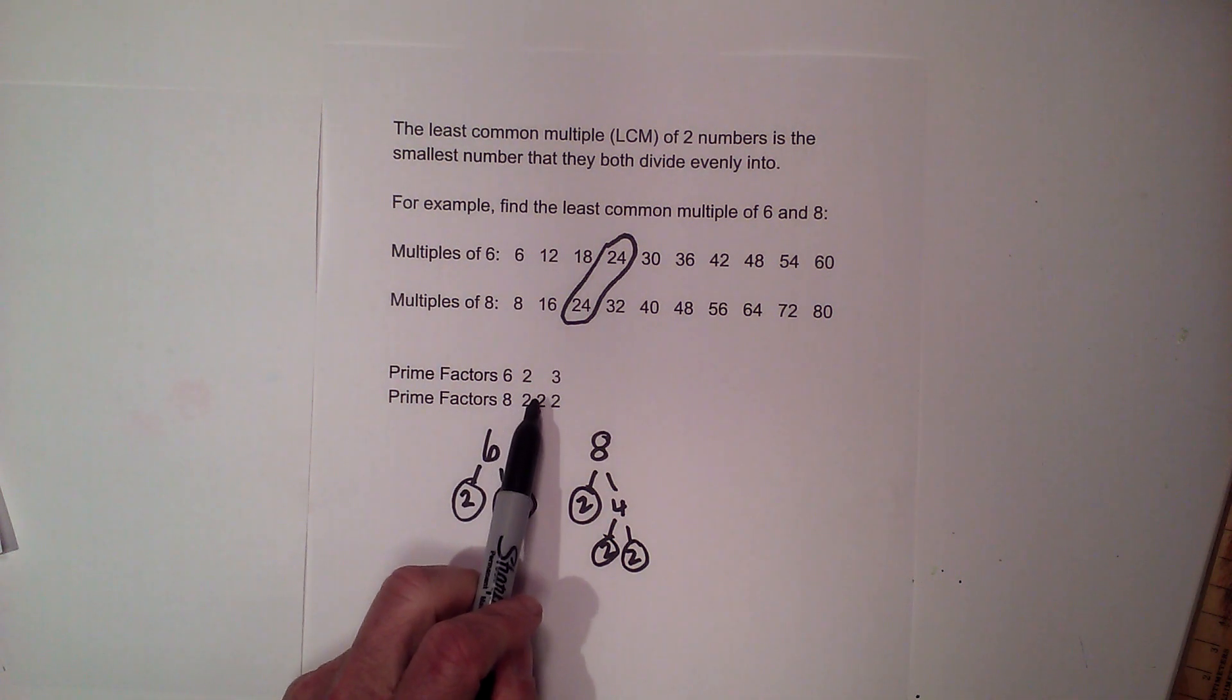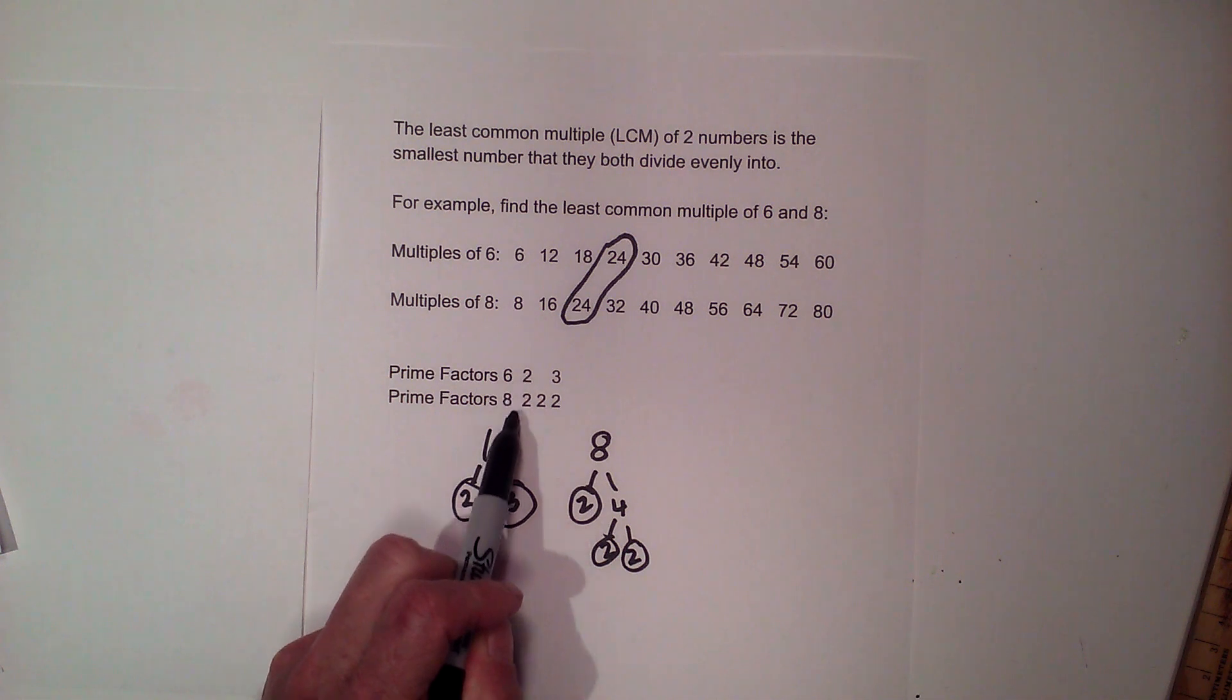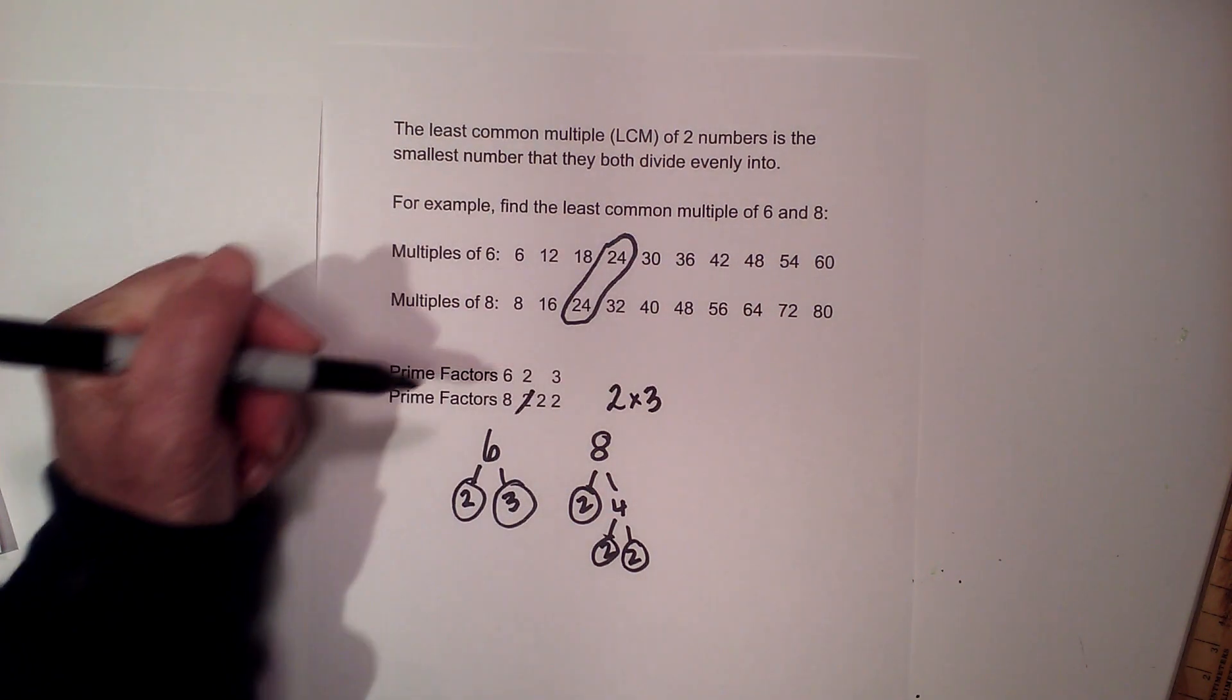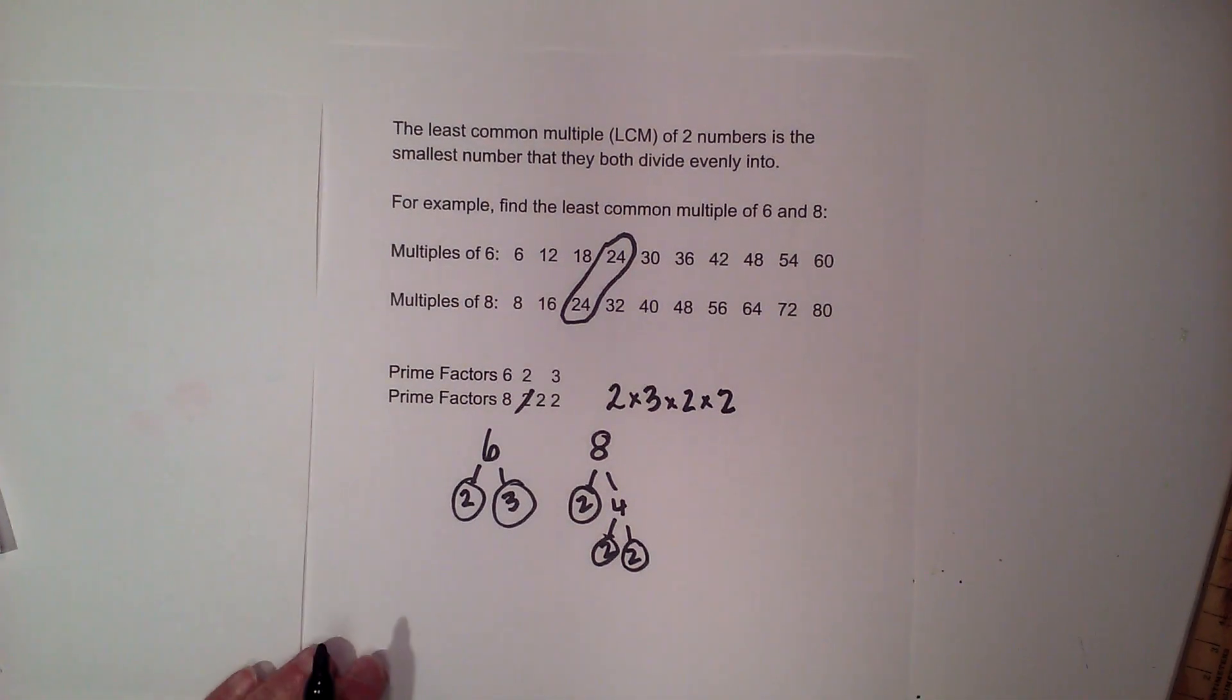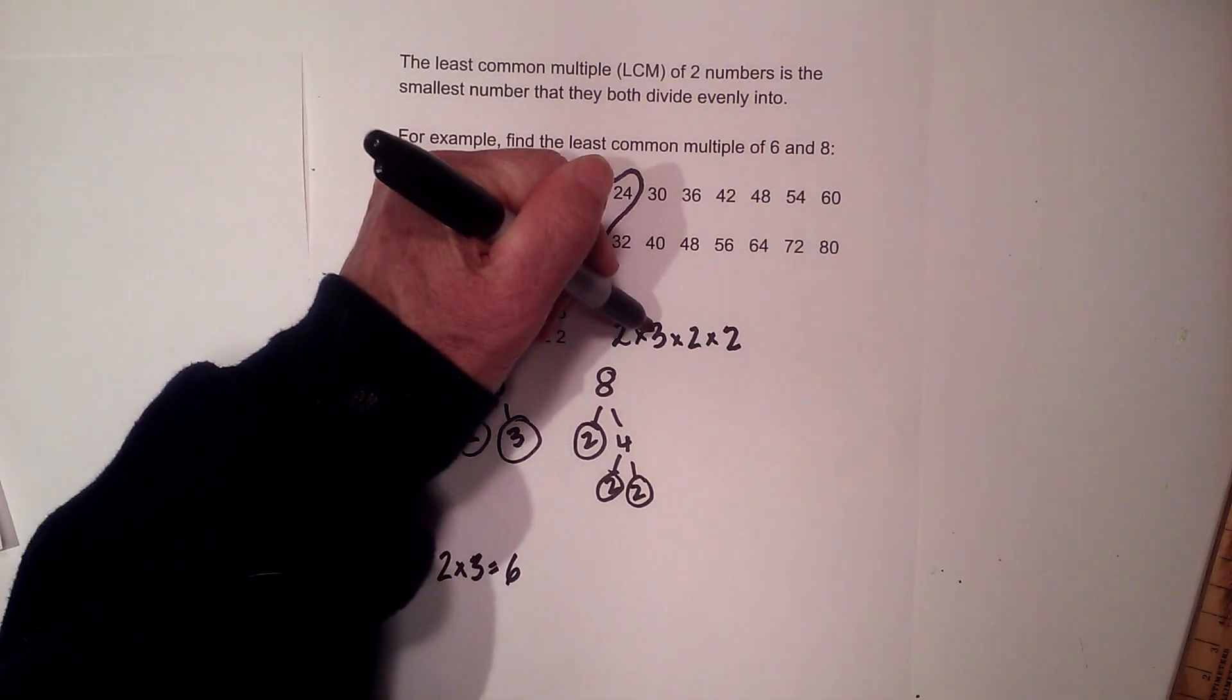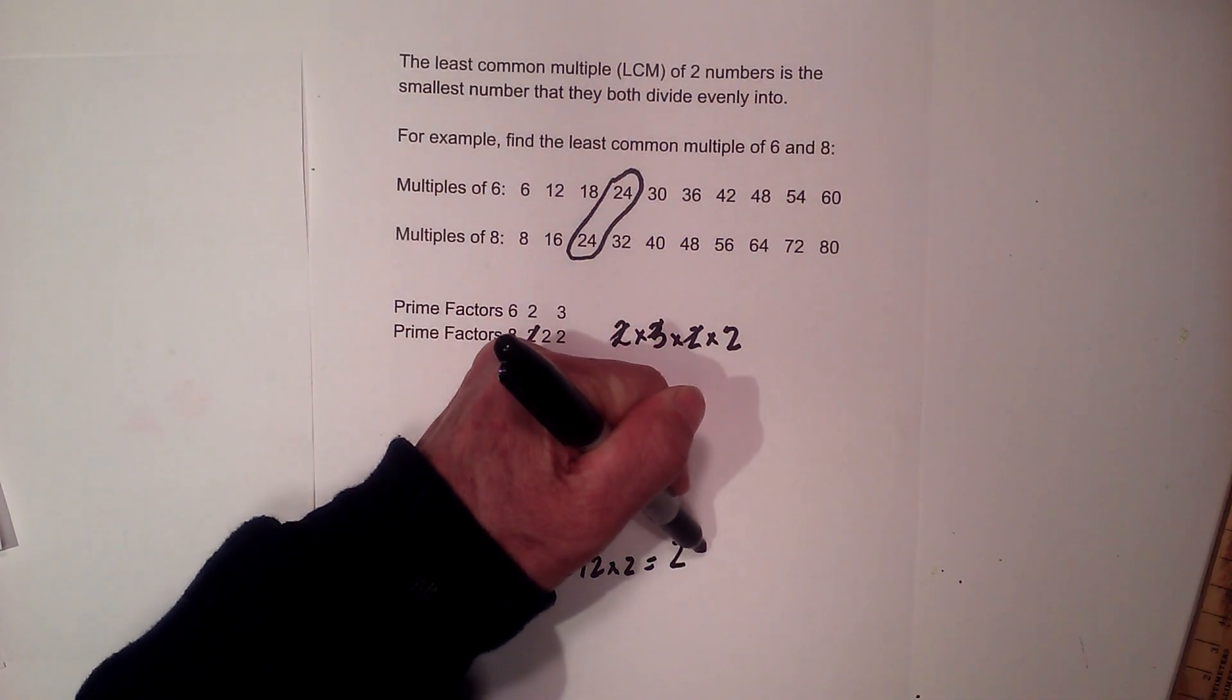Now what we do is you just multiply all of the prime factors together, with one exception. If the number is in both lists, you only multiply it once. So I'm going to have two times three, I've already used one two, then times two times two. And let me rewrite this down here. So now we have two times three equals six, six times two equals twelve, and twelve times two equals twenty-four.